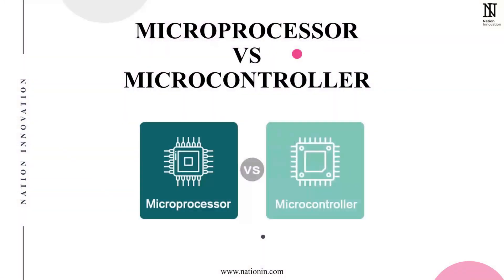Now you might be wondering: what's the difference between a microprocessor and a microcontroller? While both are crucial components in electronics, a microprocessor is designed for general-purpose computing tasks, like in computers. On the other hand, a microcontroller is tailored for specific applications, often embedded in devices to control their functions. Microprocessors can perform multiple tasks simultaneously, while microcontrollers are used to perform a specific task at a specific time.